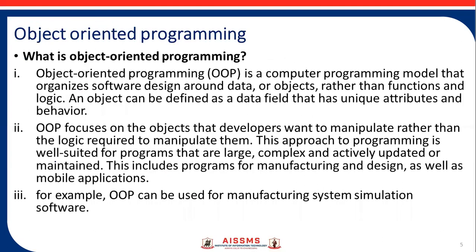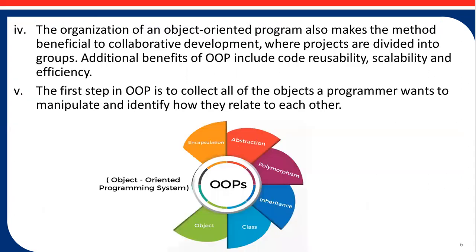Object-oriented programming is a computer programming model that organizes software design around data or objects rather than functions and logic. An object can be defined as a data field that has unique attributes and behavior. OOP focuses on the objects that developers want to manipulate. For example, OOP can be used for manufacturing system simulation software. The main concepts included in OOP are encapsulation, abstraction, polymorphism, inheritance, class, and object.